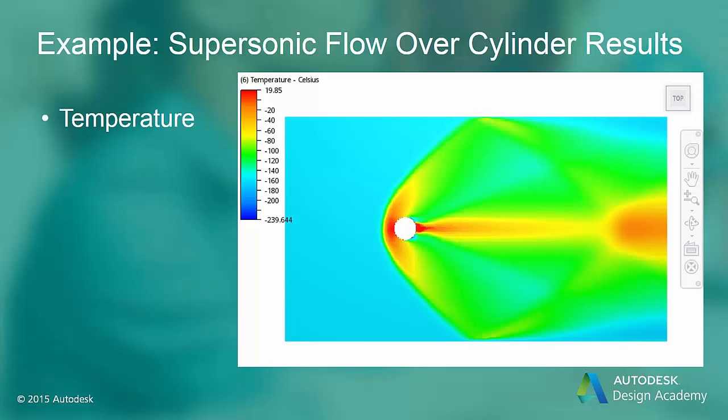The temperature plot shows the separation shock region to be the coldest area on the cylinder surface. Whereas the trailing edge is the hottest point, even hotter than the stagnation point. This large temperature gradient over such a small area will lead to major thermal stresses on the cylinder.